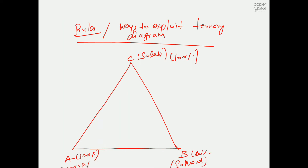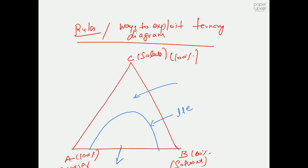We have something like a liquid-liquid equilibrium line (binodal curve). We have a two-phase region inside this curve, and everything above it is a homogeneous mixture.